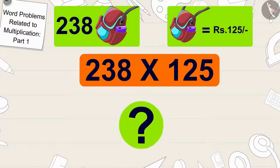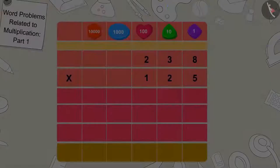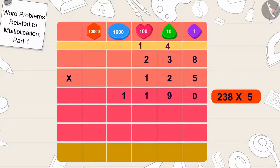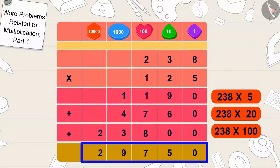Children, can you find the answer to this multiplication? If you want, you can stop the video and find the answer. In this way, we can find the answer of 238 times 125 is 29,750.